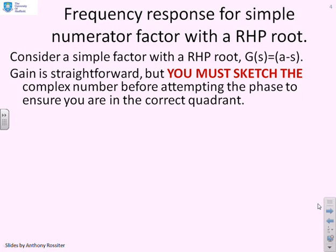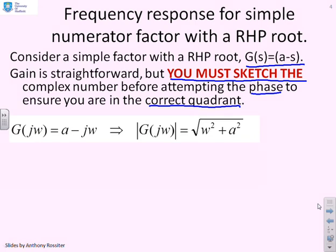That's what we want to do here, and we'll start with an example. We've given a simple transfer function G(s) = a - s, and we want to calculate the gain and phase. Note the warning highlighted in red: to make sure you don't make a mistake, we advise you always sketch the complex number you're interested in before you start. That will make sure you get the phase in the correct quadrant — if you don't do a sketch, there's probably a 50% likelihood you'll get the phase wrong by 180 degrees. The gain is easy: the fact that you have a - jω as opposed to a + jω makes no difference to the modulus. The modulus is still the square root of ω² + a².